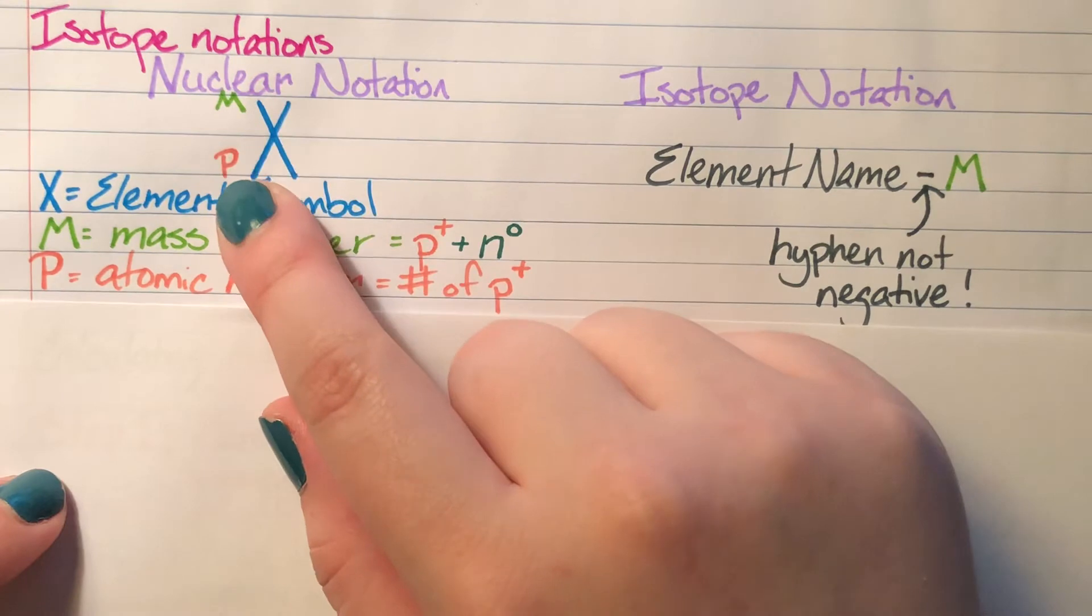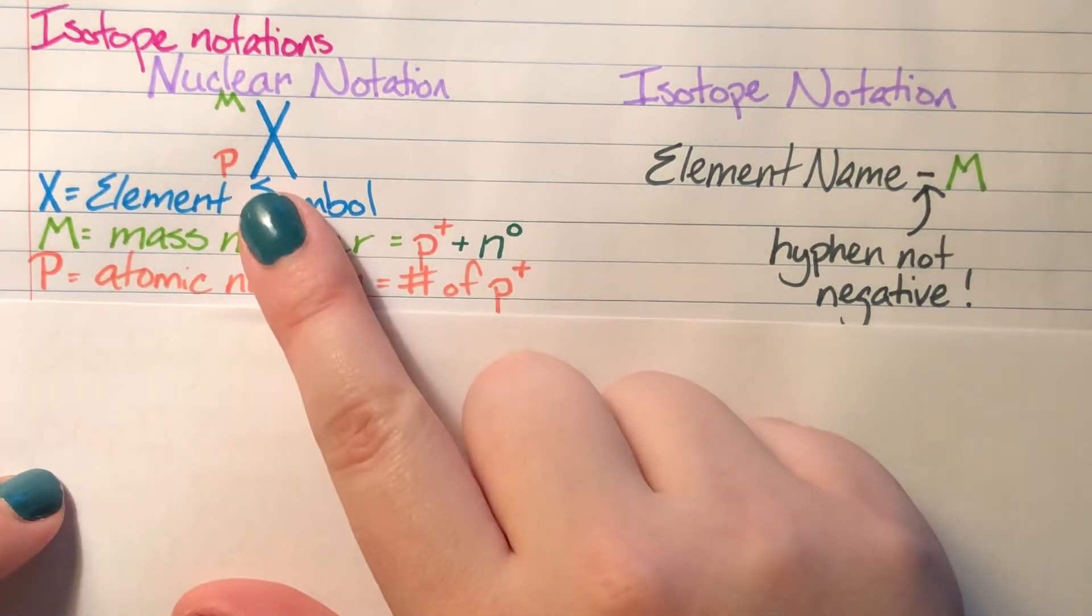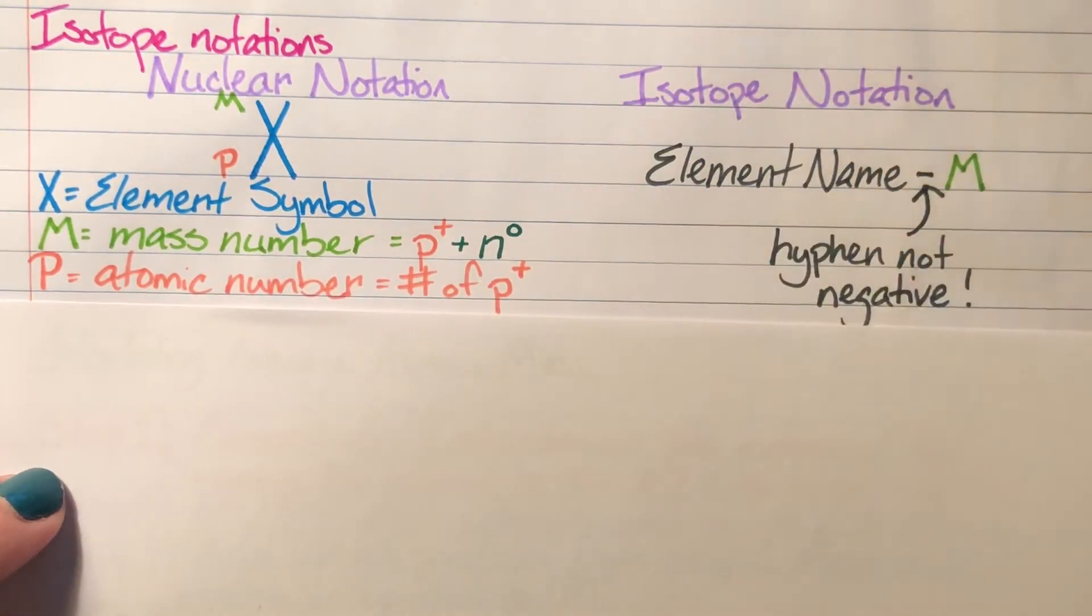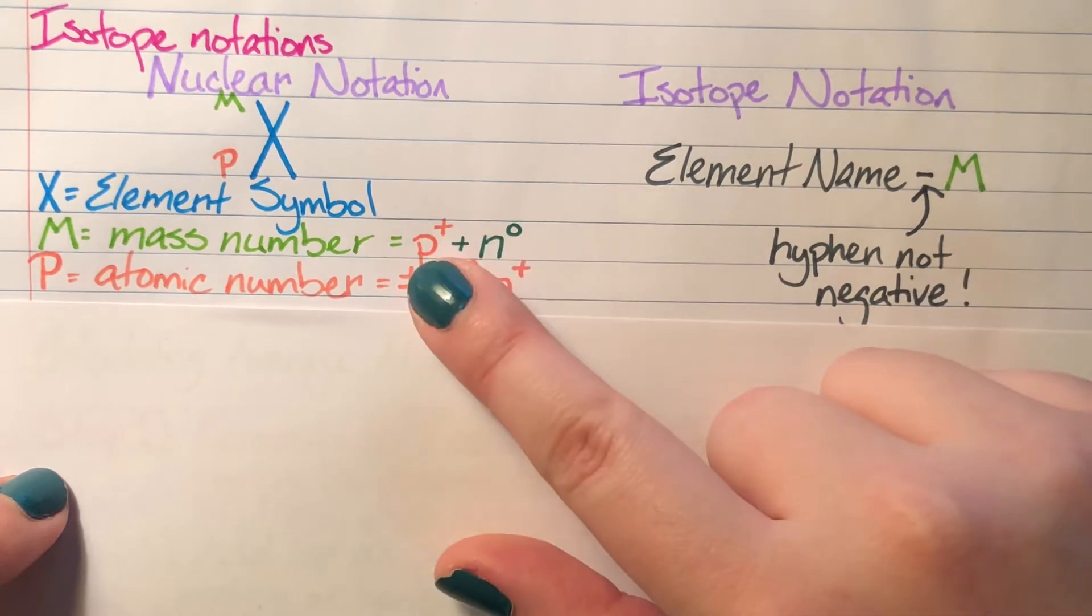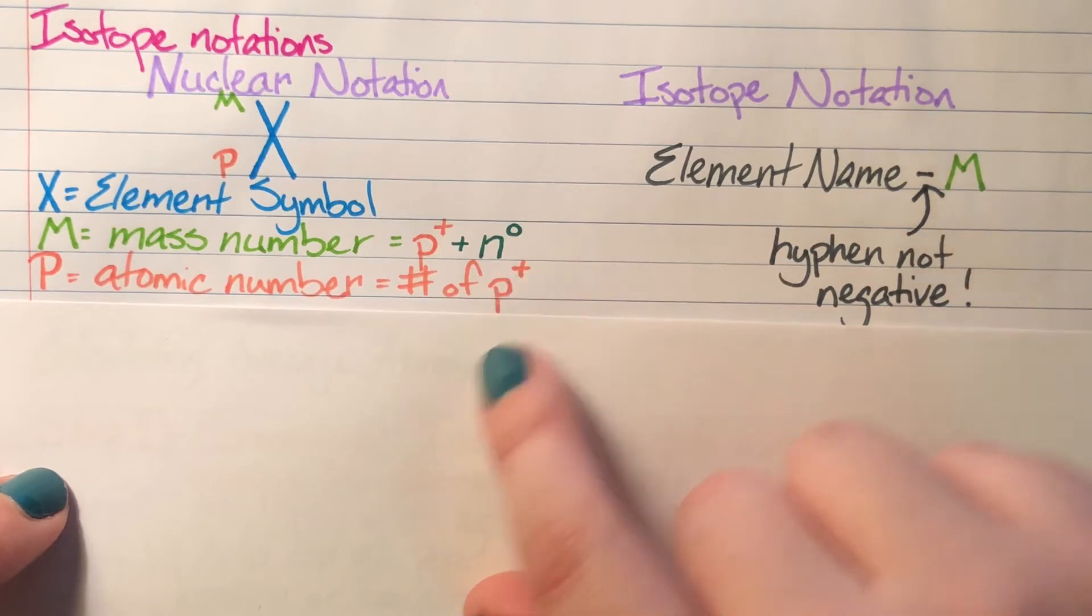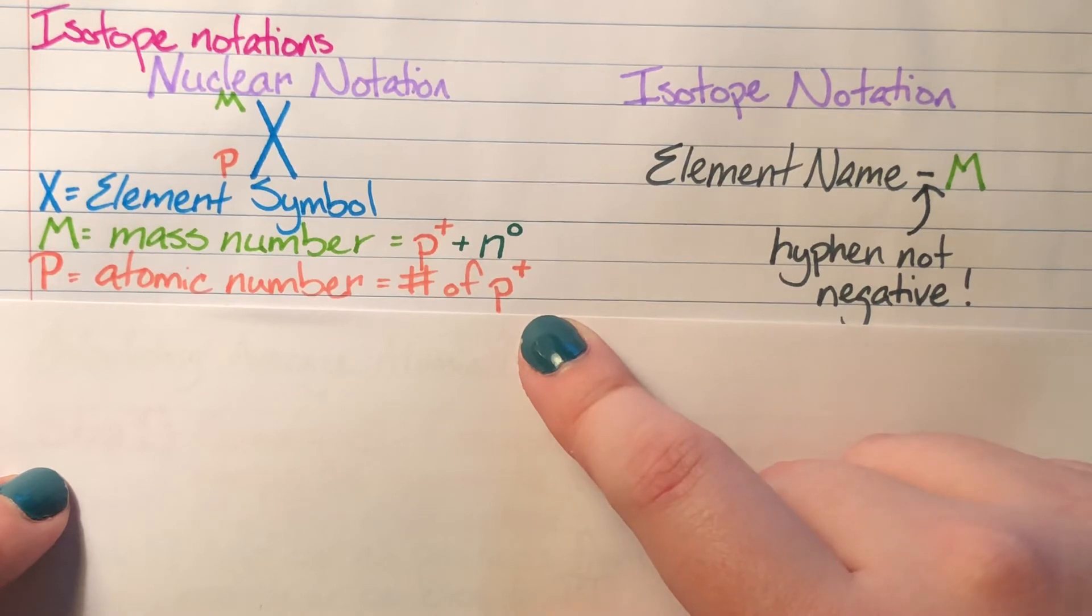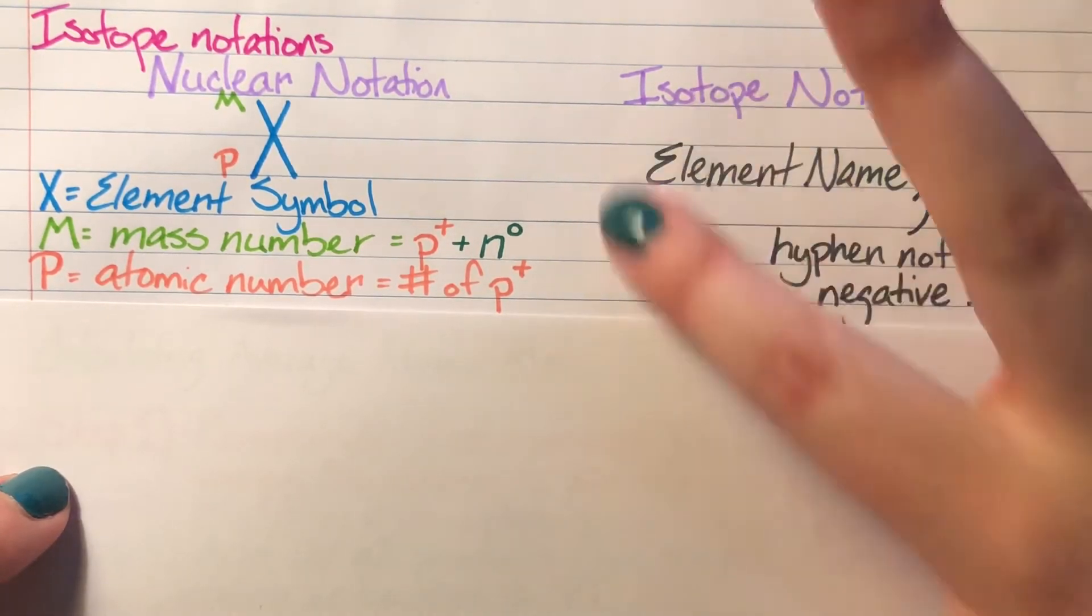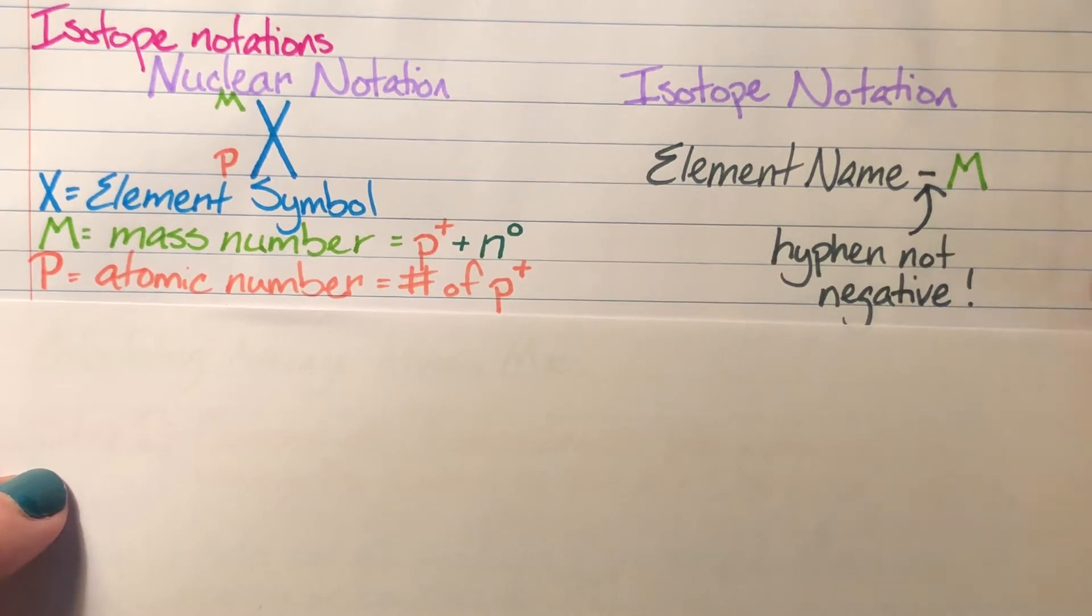Finally, we have our atomic number. For nuclear notation, it appears in the bottom left hand corner of our element symbol, but it appears nowhere in our isotope notation. Remember that our mass number is the number of protons plus neutrons as a whole number, and our atomic number is just the number of protons. Also note: for standard isotope notation, this is a hyphen, not a negative—it's carbon-12, not carbon negative 12.